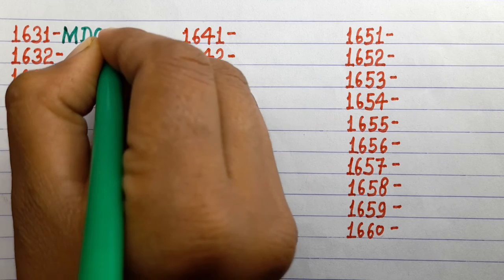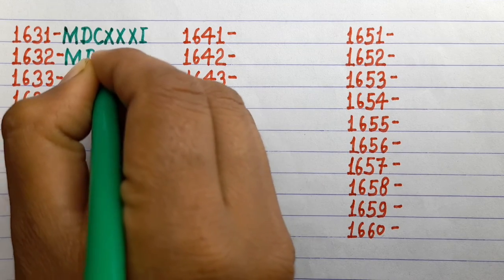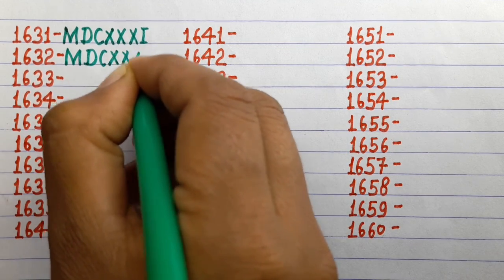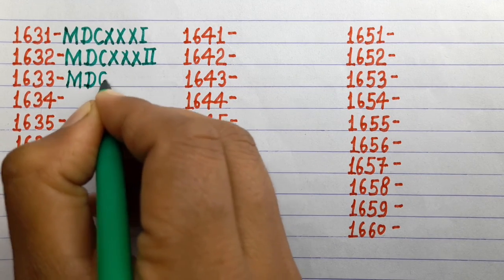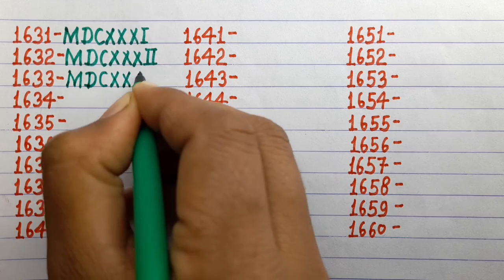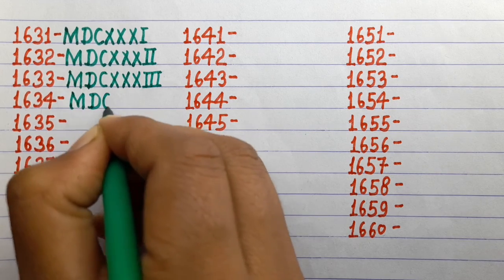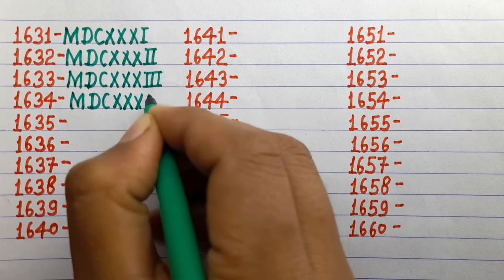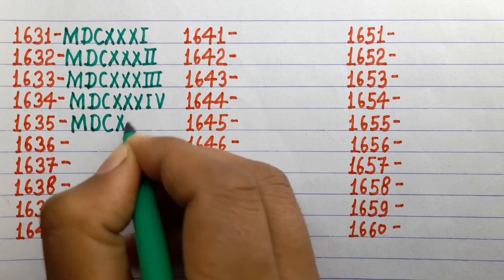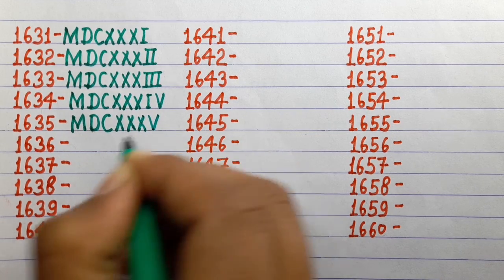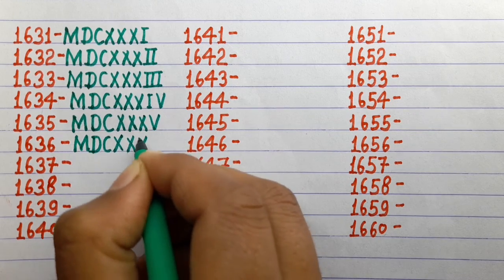1631 MDCXXXI, 1632 MDCXXXII, 1633 MDCXXXIII, 1634 MDCXXXIV, 1635 MDCXXXV, 1636 MDCXXXVI.